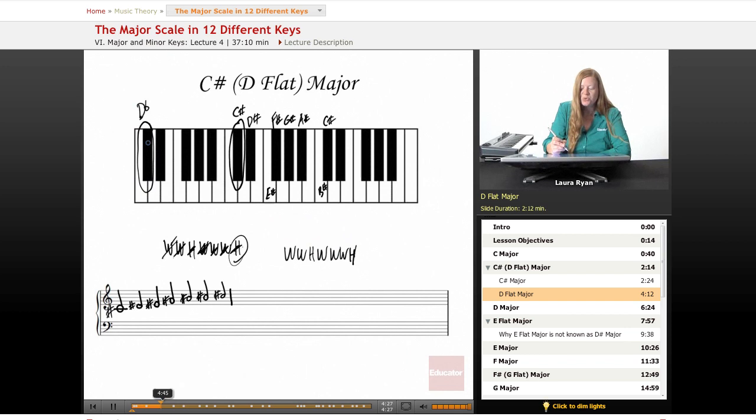D flat to E flat, that is a whole step. E flat to F, that's our next whole step. F doesn't need anything, it's just regular F. Now we need a half step, F to G flat. G flat to A flat is a whole step. A flat to B flat is another whole step. We need one more whole step, B flat to C. And now we need one last half step, C to D flat.